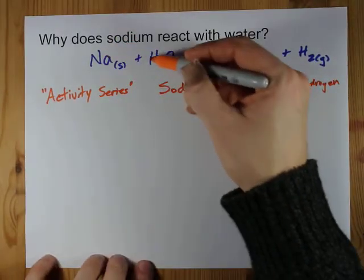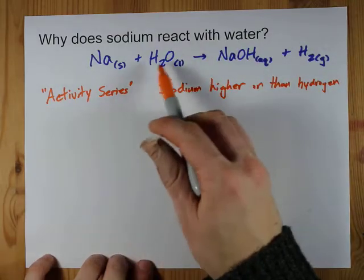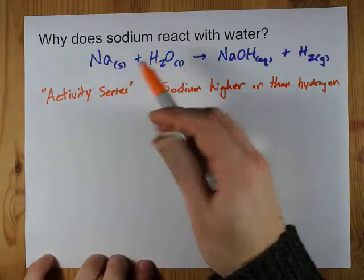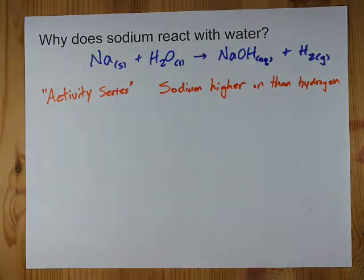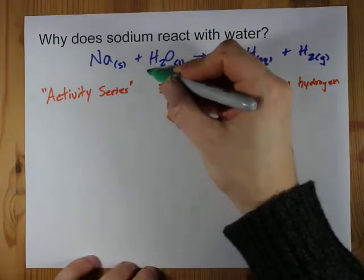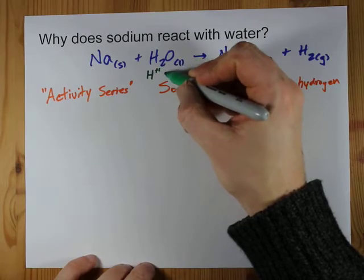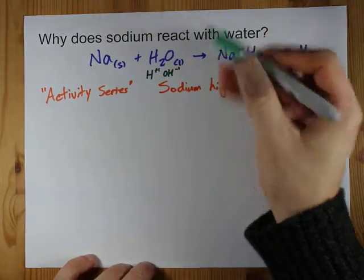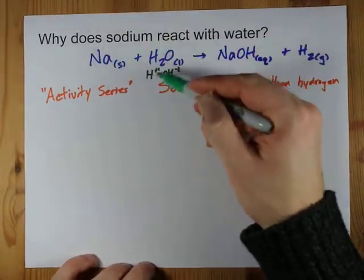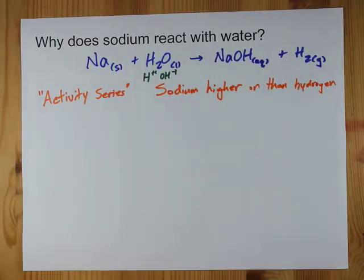The sodium kicks it out in a single displacement reaction, leaving you with an OH⁻ ion. Water in a single displacement reaction is treated like it's a hydrogen hydroxide ionic compound, and the sodium displaces the hydrogen and makes the NaOH.